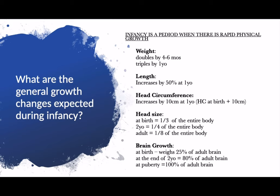The younger the child, the higher the proportion of the head compared to the body. In terms of brain growth, at birth the brain weighs 25% of an adult brain, and by the end of two years old it reaches 80% of the adult brain. At puberty, the brain reaches adult size. This means there is rapid brain growth between birth and two years old, making infancy an important stage for brain development.